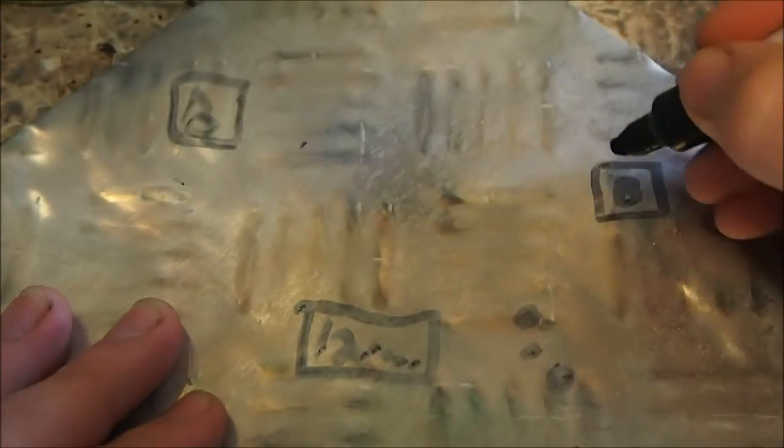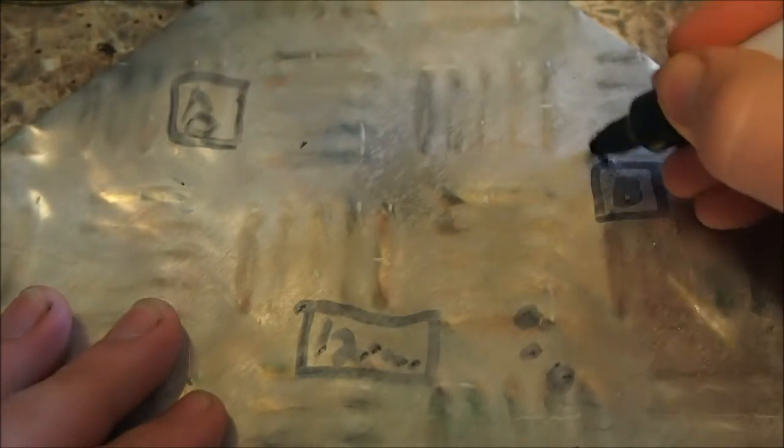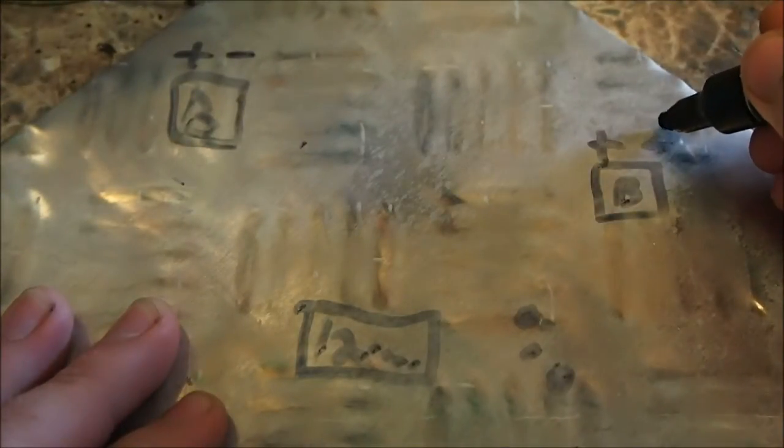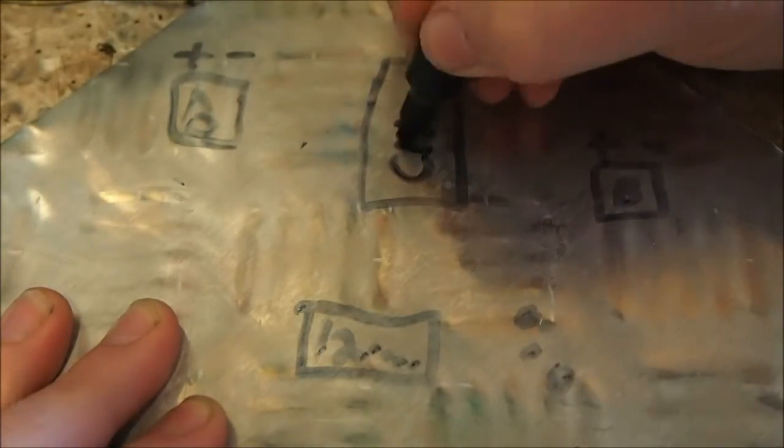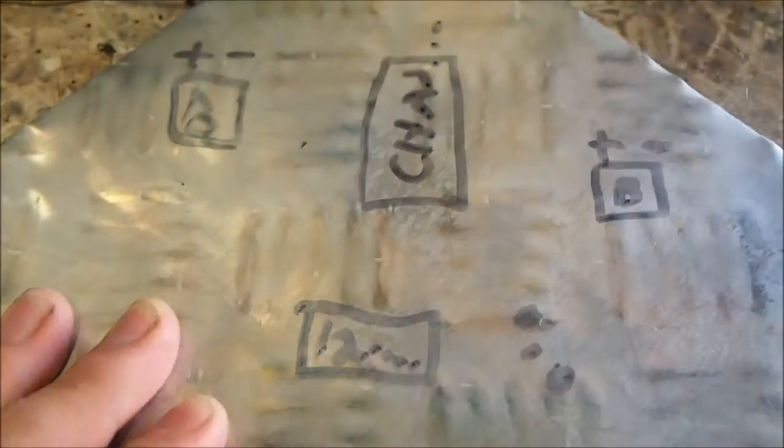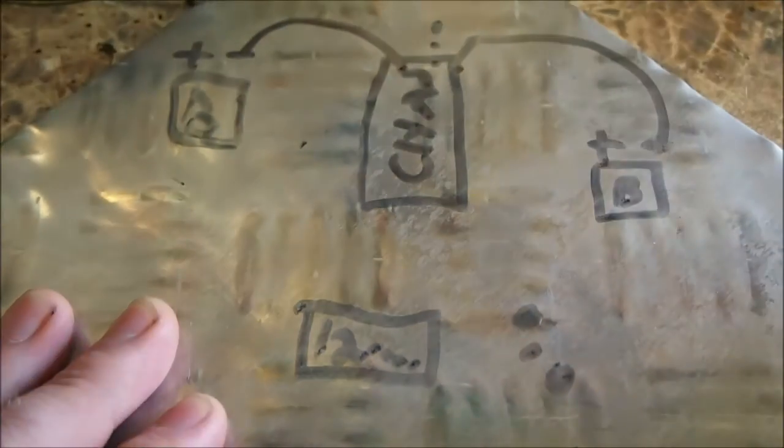So firstly you have this battery here and you have positive, negative, positive, negative. The negatives are connected to your chassis, so let's say this is your chassis and these are connected to this as a common earth.